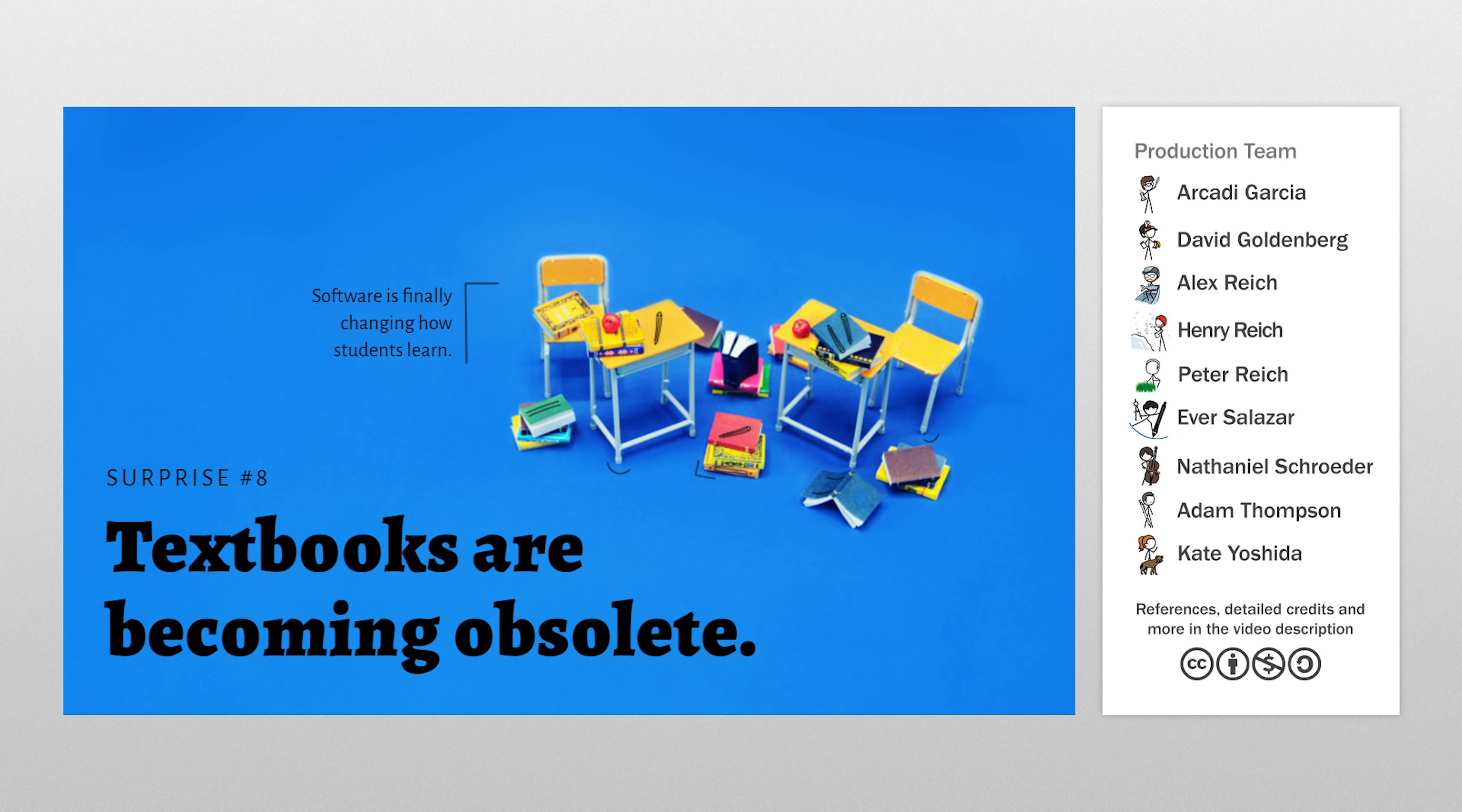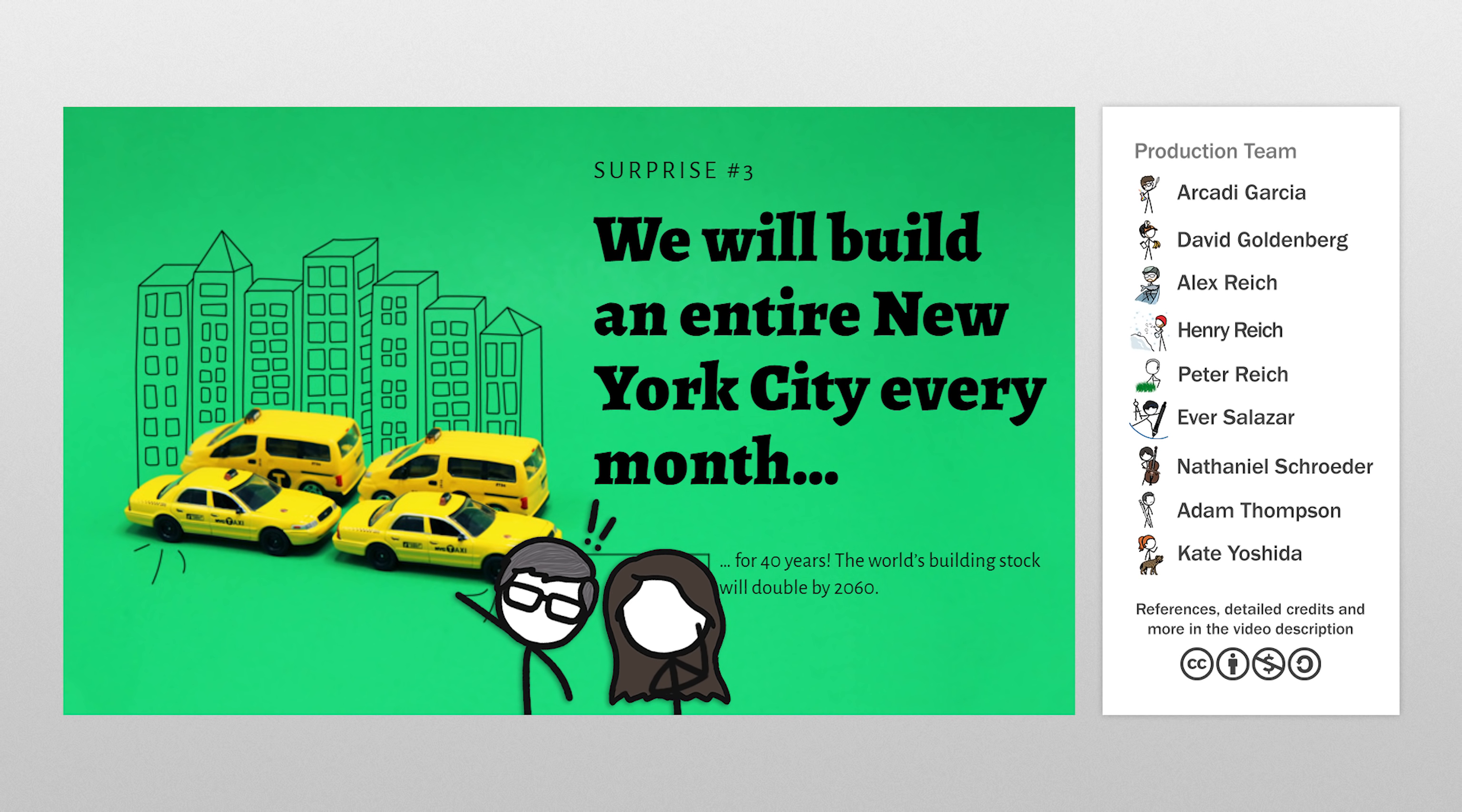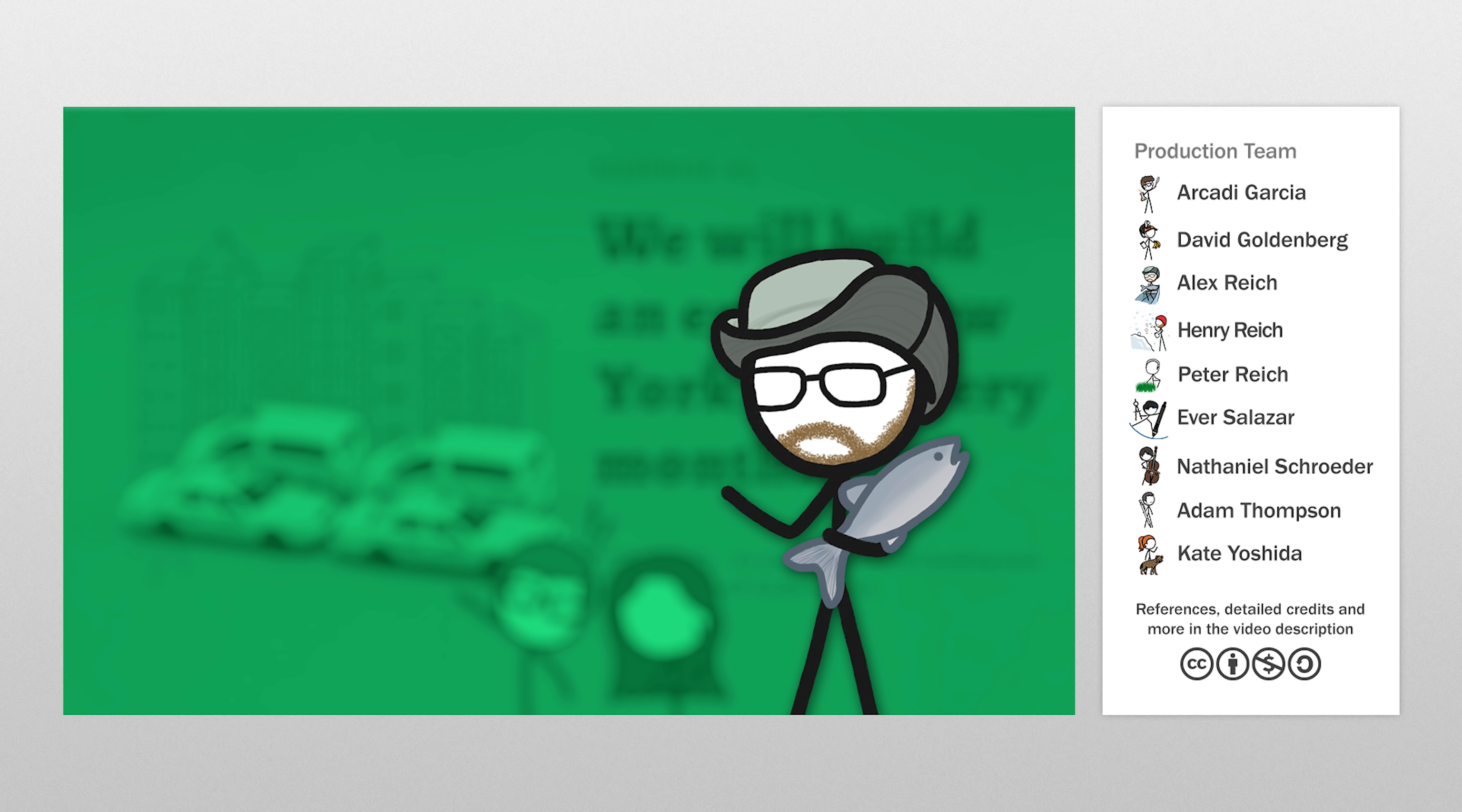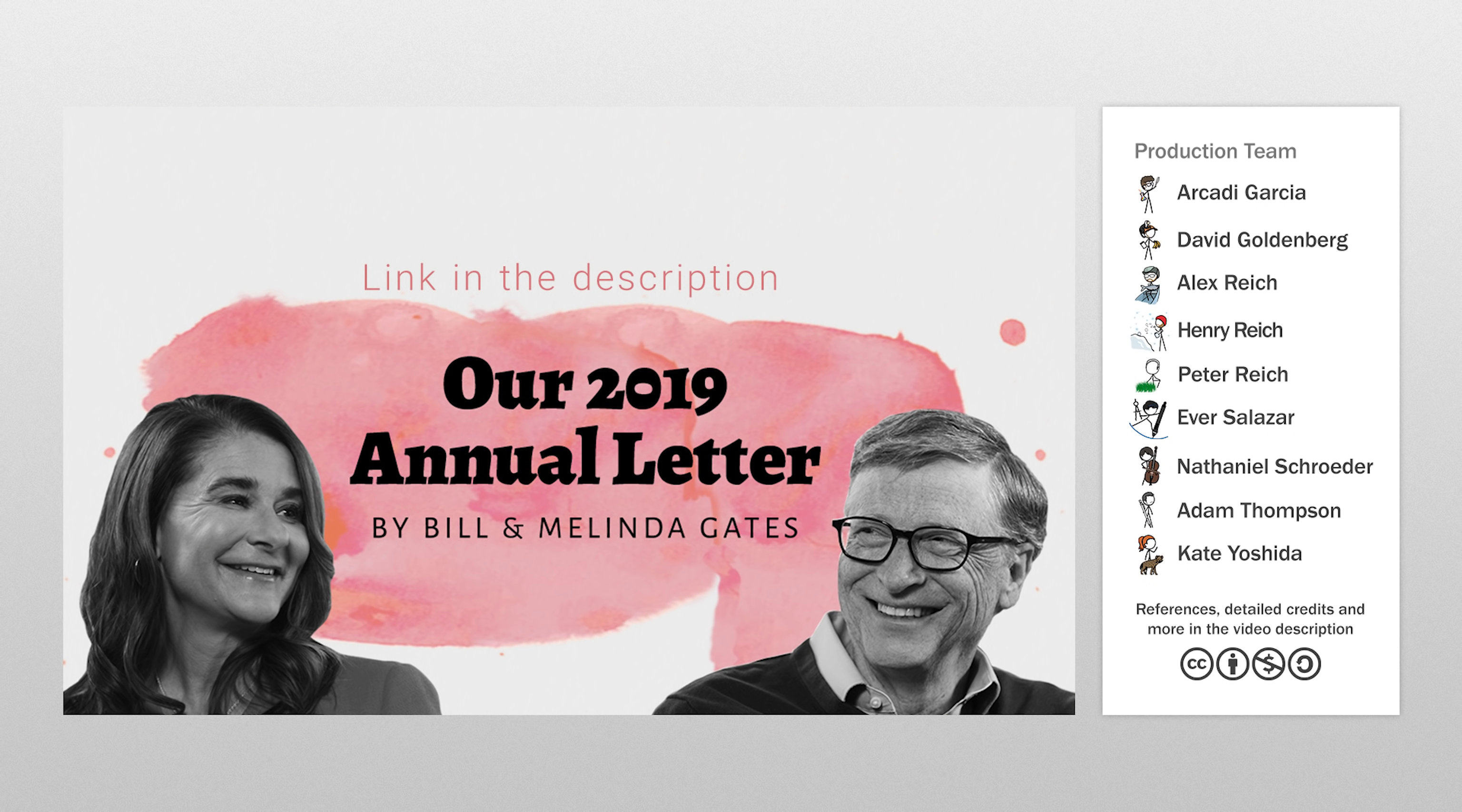In addition to being surprised by the rapid death of old-school textbooks, and the fact that toilets haven't changed in a century, they were also troubled by the environmental impacts of global urbanization. And we were happy to help them explain one of the impacts in a concrete way. To read the letter yourself, click the link in the description, or visit gatesletter.com.